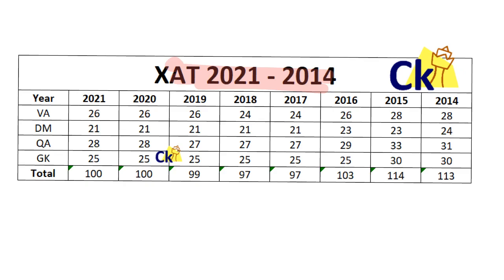Yes, earlier the pattern used to change every year. But if you look at the last 10 years, I'd say the same pattern is coming — 26 questions, 24 questions, again 26, 28. So if I take an average, approximately 25 questions you will find from the verbal section.